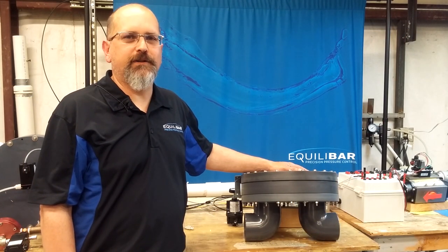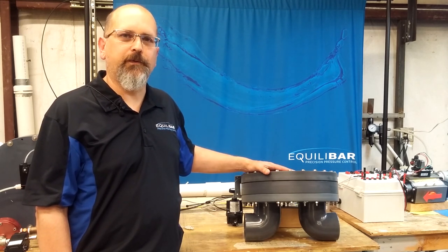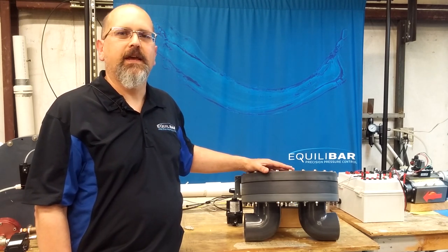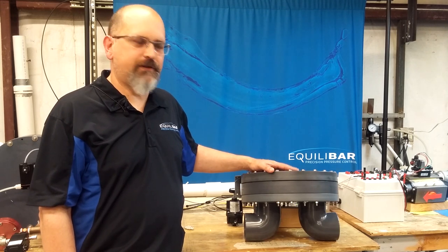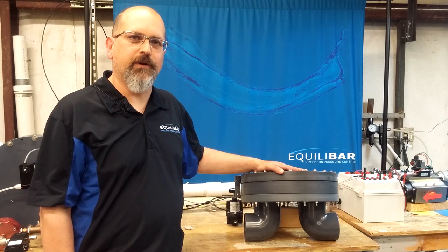Equilibar vacuum regulators are available in a variety of sizes, from one quarter inch through four inch pipe size. They're available in a variety of materials, from plastic like this model, to stainless steel, and also aluminum.